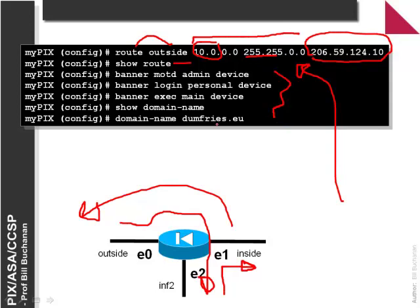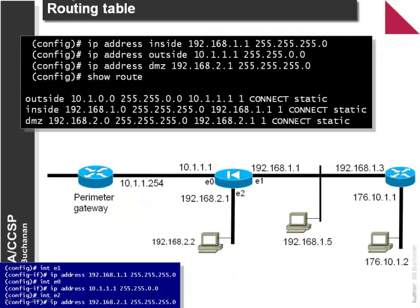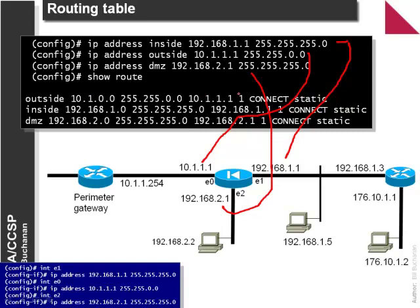The 'show route' command allows us to view the routes configured. After setting the IP addresses of our PIX — inside, outside, and DMZ — once we do a 'show route' we can see three static routes set up. Anything with 10.1 in it will be sent to 10.1.1.1, so anything arriving on the inside port will be sent automatically to the inside network. The inside is another static route and then the DMZ.